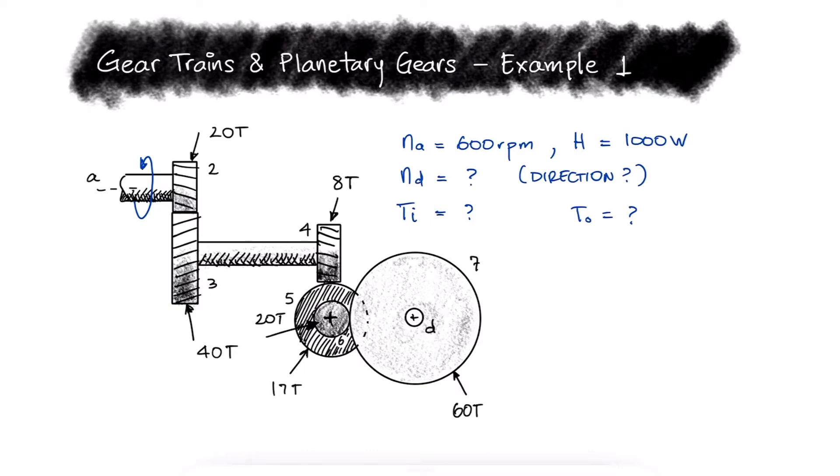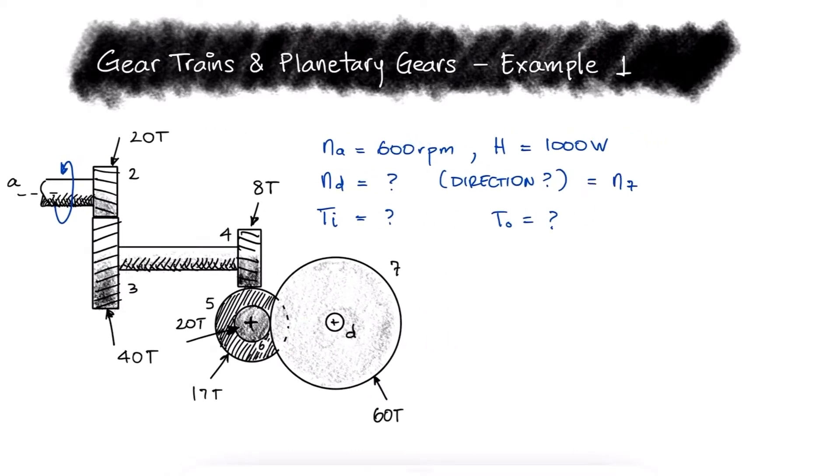To find the speed of shaft D, which is the same as the speed of gear 7, we'll use the relationship between number of teeth and rotational speed. This relationship shows us that the ratio between the speeds is inversely proportional to the number of teeth.